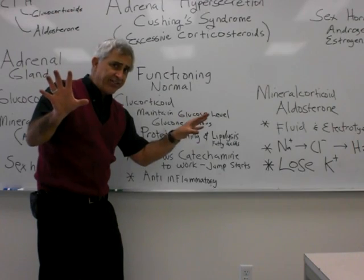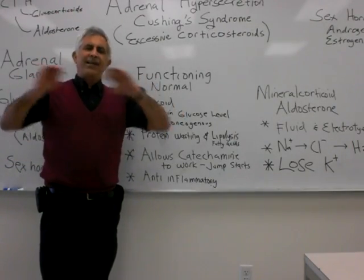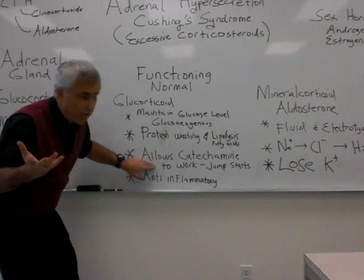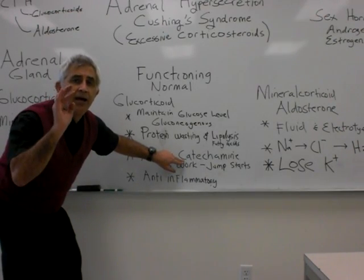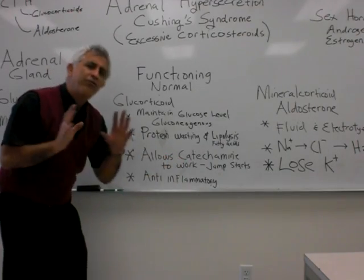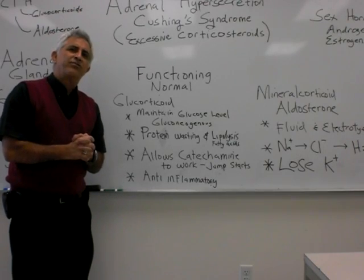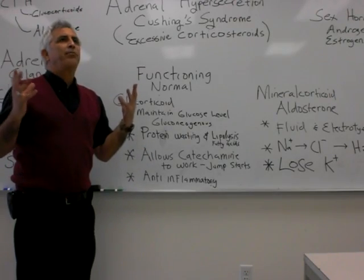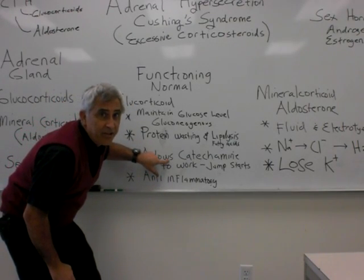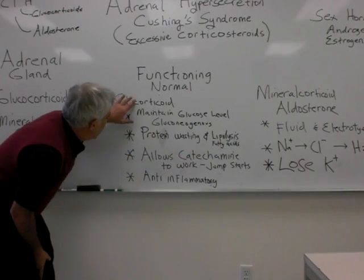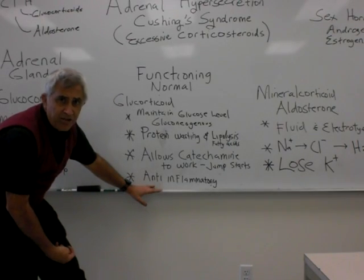You've heard of the sympathetic nervous system — the adrenaline response. In order for that to function fully, the catecholamines — adrenaline, noradrenaline, norepinephrine — cannot do their work without glucocorticoids. I think of it as jump-starting the response; this is called a permissive effect. It plays a vital role in helping you respond to stress. Glucocorticoids are also anti-inflammatory — sometimes we treat arthritis with intraocular injections to reduce inflammation.